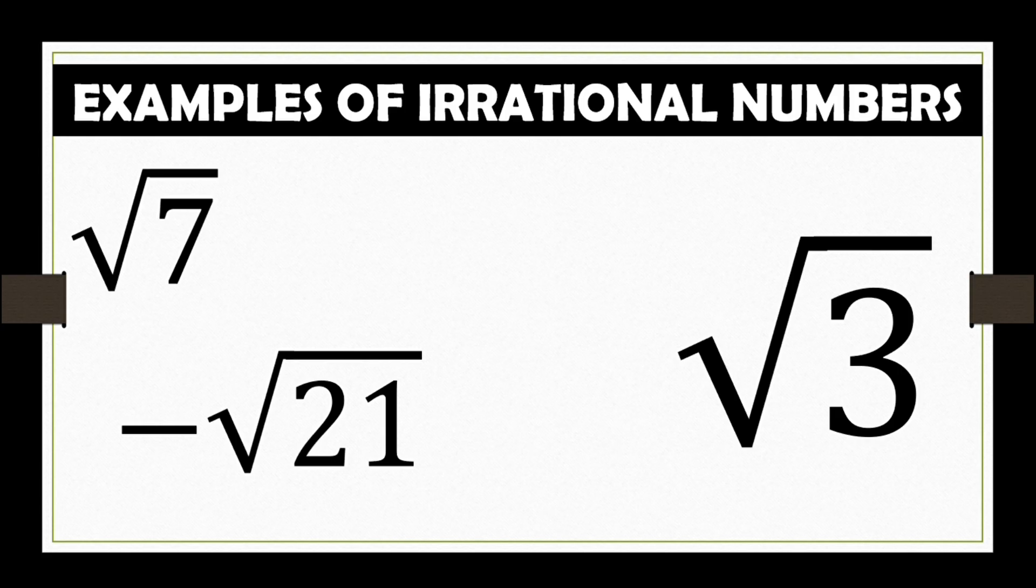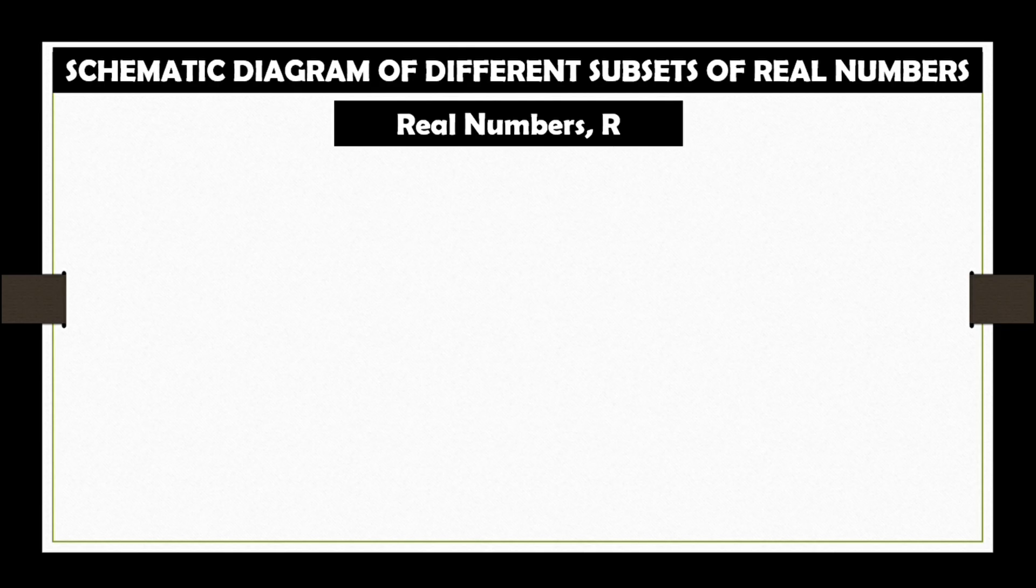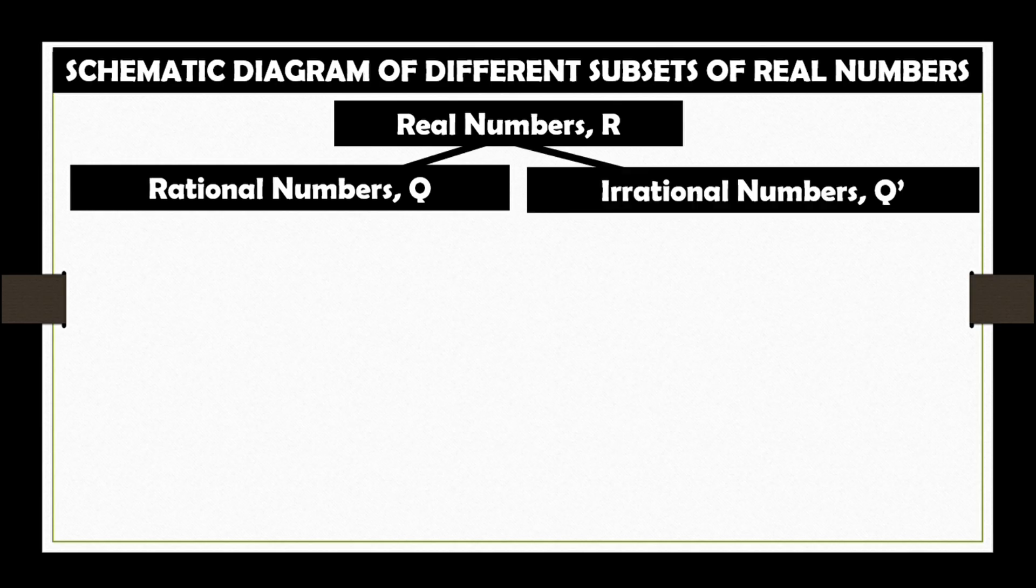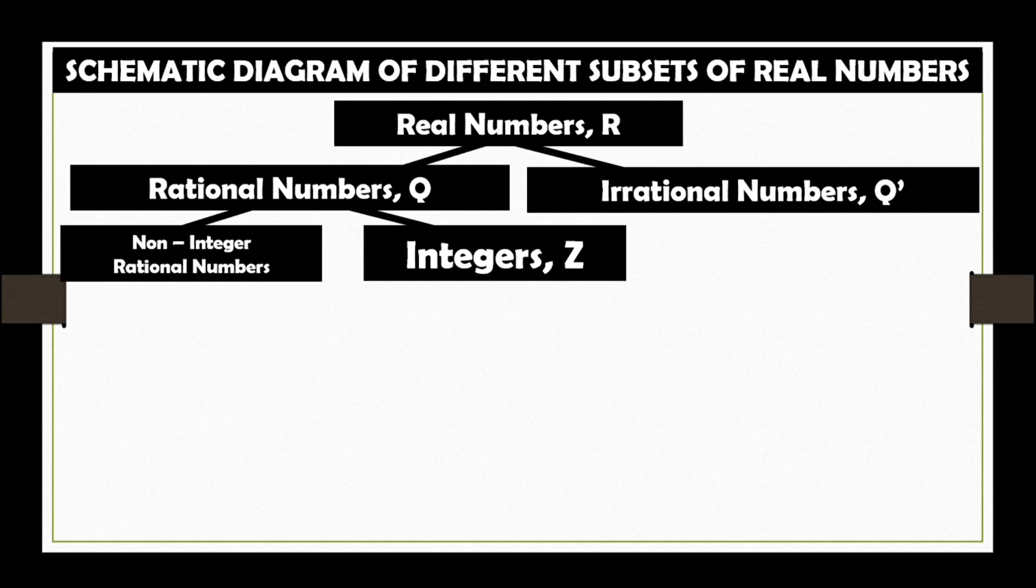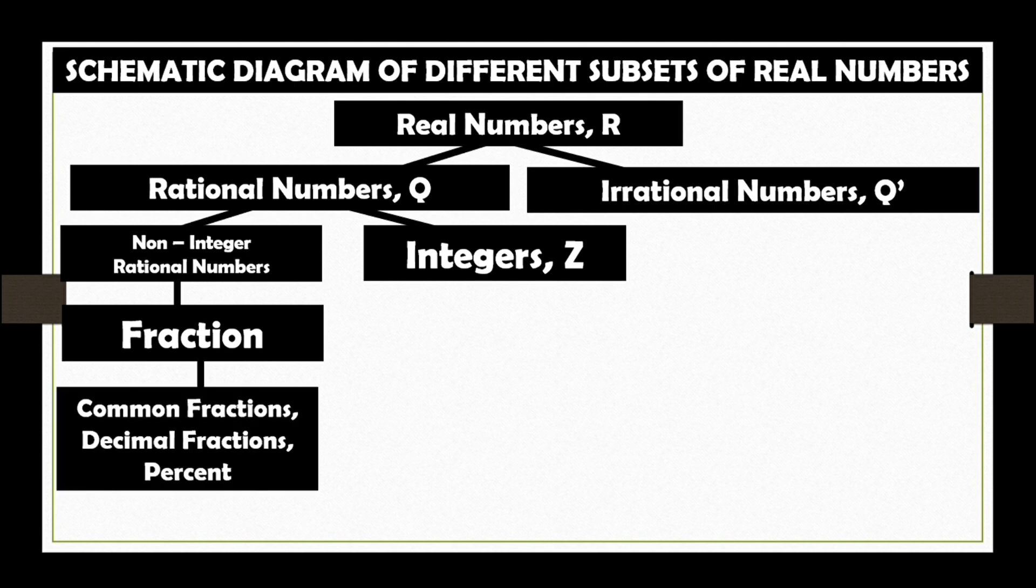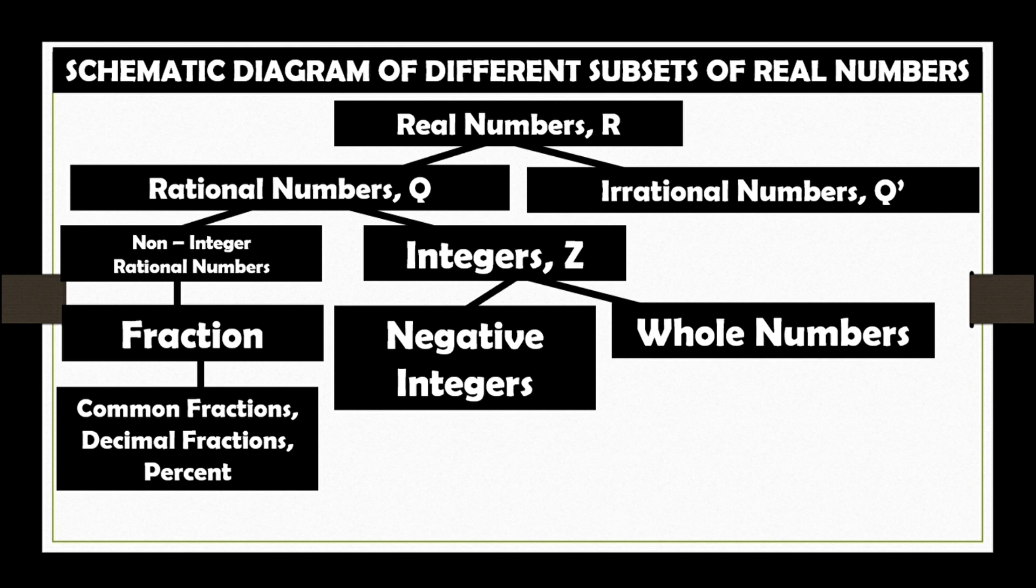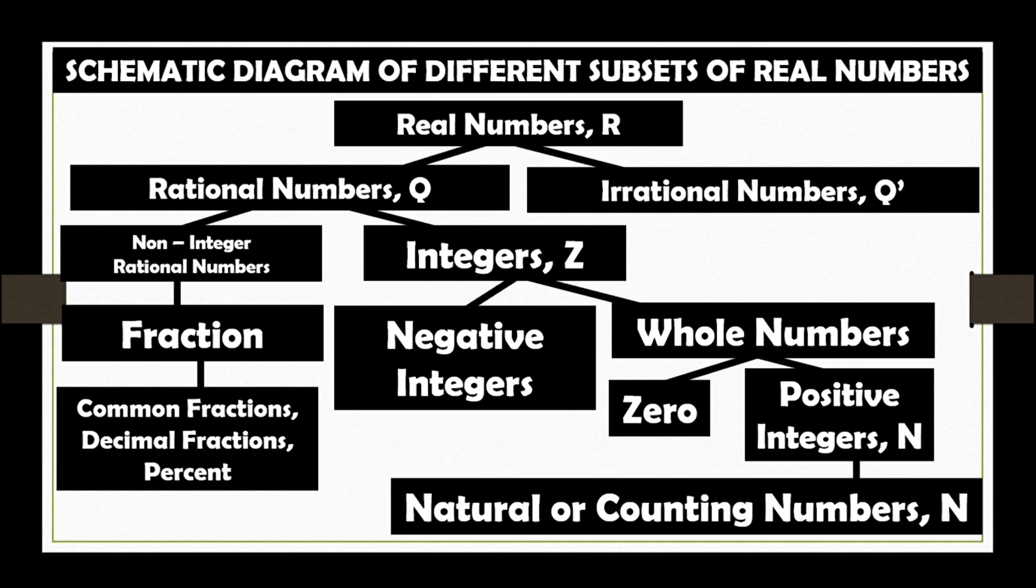Other examples of irrational numbers are square root of 7, negative square root of 21, square root of 3, and square root of 11. This schematic diagram of different subsets of real numbers is illustrated first with real numbers R. It is classified into 2, the rational numbers Q and irrational numbers Q'. Under rational numbers, we have the non-integer rational numbers and integers Z. Under the non-integer rational numbers, we have fraction which includes the common fractions, decimal fractions, and percent. While under integers, we have the negative integers and the whole numbers. Whole numbers are classified as 0 and positive integers N, that is the natural or counting numbers.